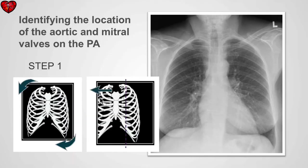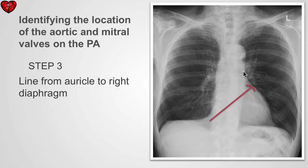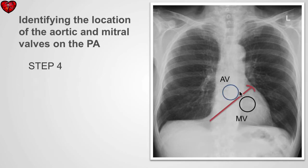How do we identify the location of the aortic and mitral valves on a PA examination? First, we make sure that the patient is properly centered and is not rotated. Next, we identify the auricle of the left atrium, remembering that the left heart border is formed by the left ventricle inferiorly, followed by the auricle, and then the pulmonary outflow tract. Next, we draw a line from the auricle to the medial aspect of the right hemidiaphragm. The aortic valve will lie superior and to the right of this line, and the mitral valve will lie inferior and to the left of this line.